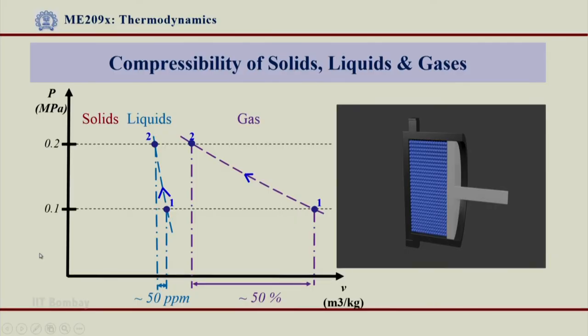I will do the same experiment now and have a solid as a medium for compression. Again the compression would happen from 0.1 to 0.2 and from 0.1 MPa to 0.2 MPa and this shows that now I have taken solid for compression in the cylinder and piston arrangement. What do you expect? When I do compression of solid as you know there will hardly any reduction in the volume of the solid.